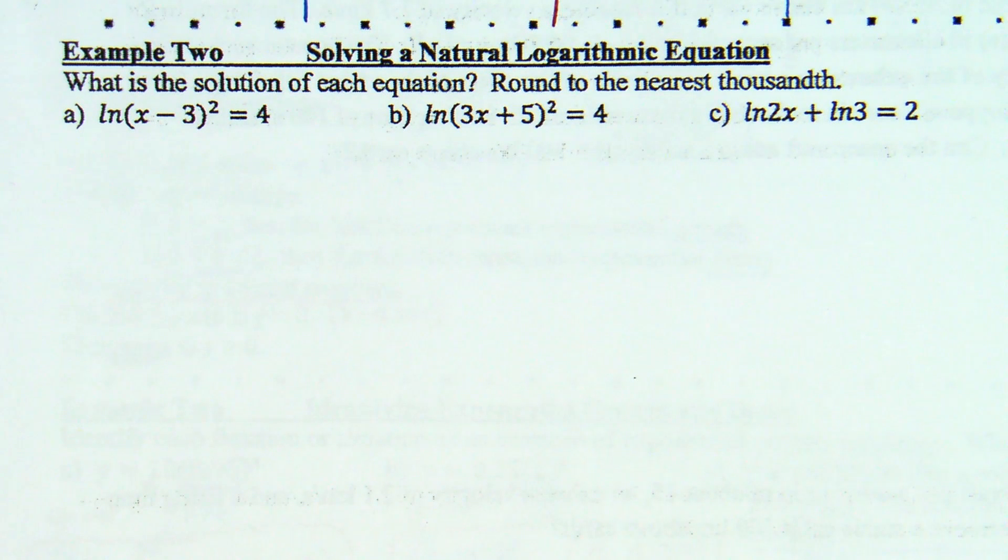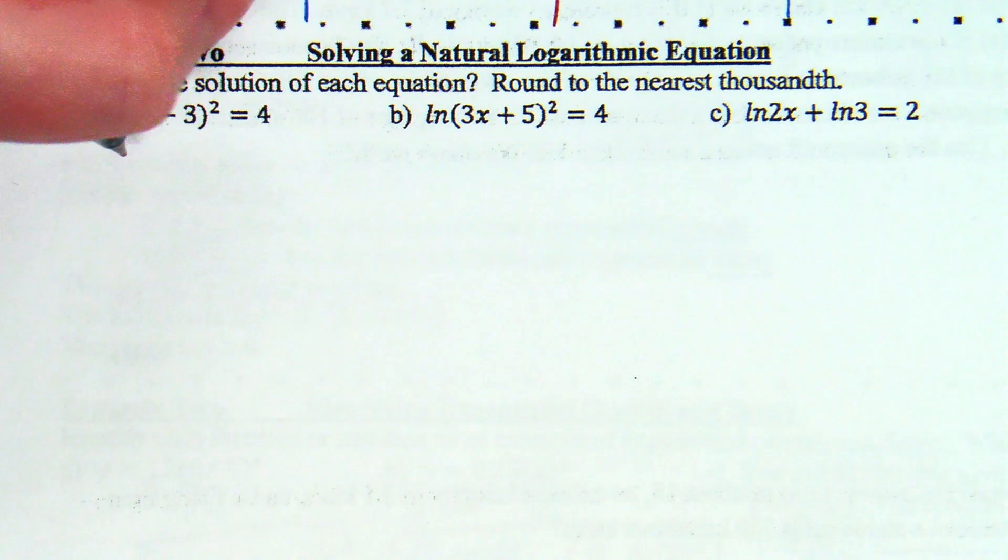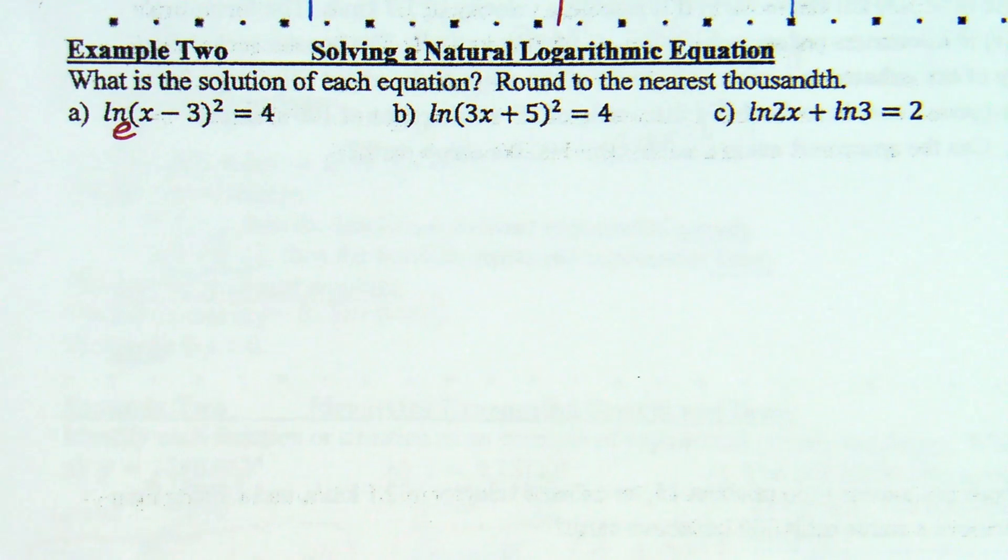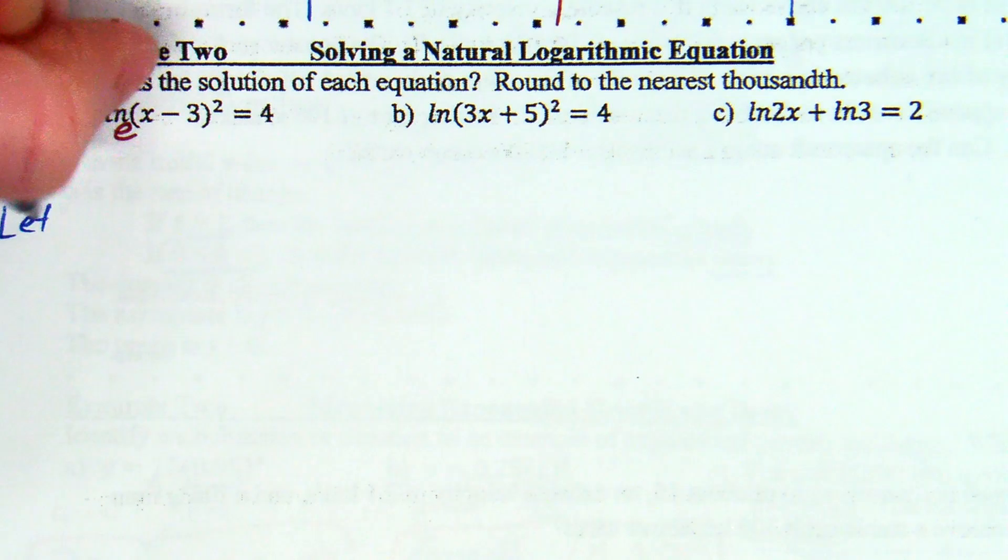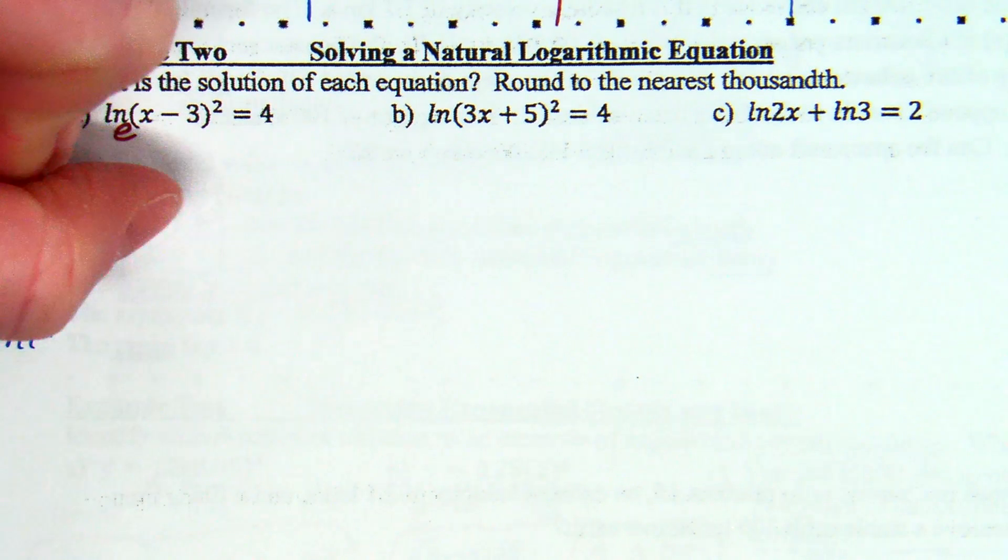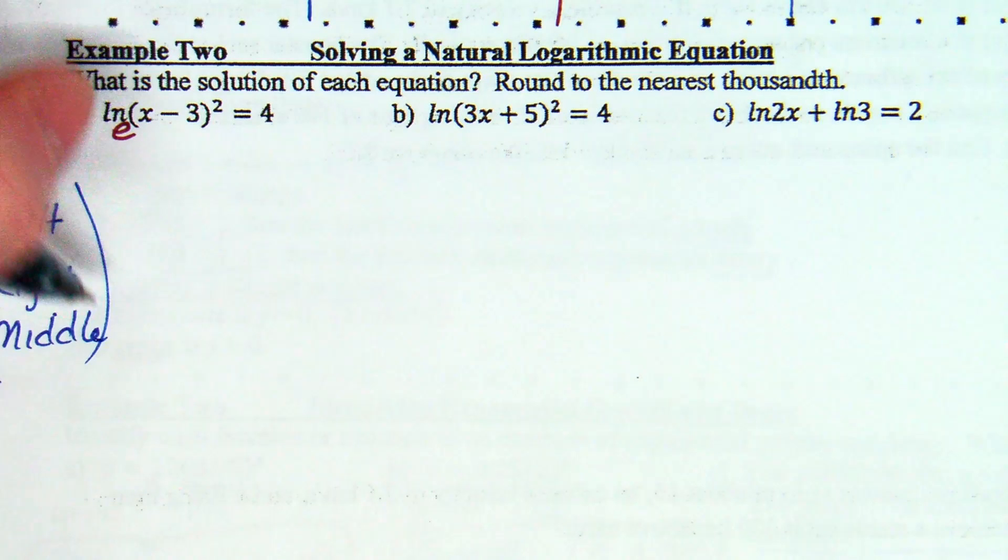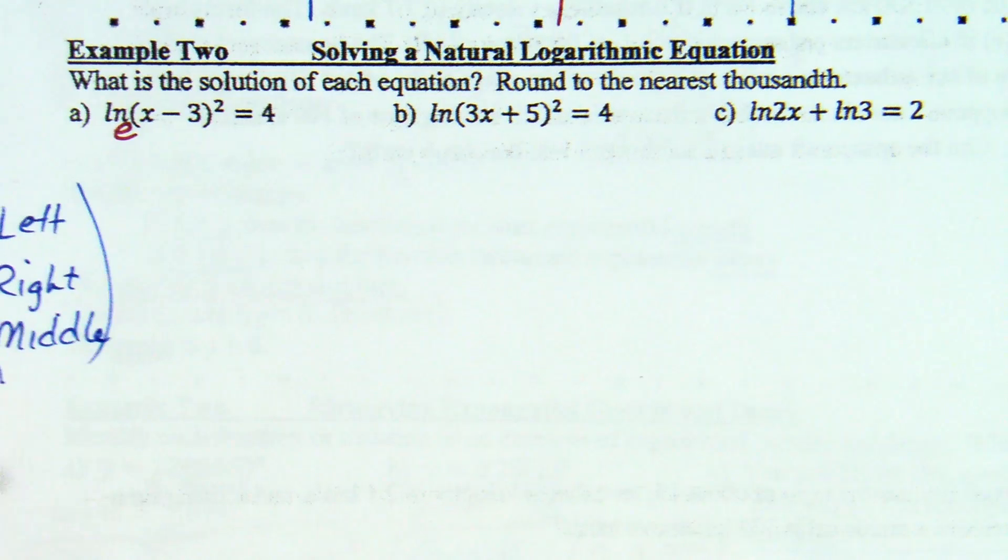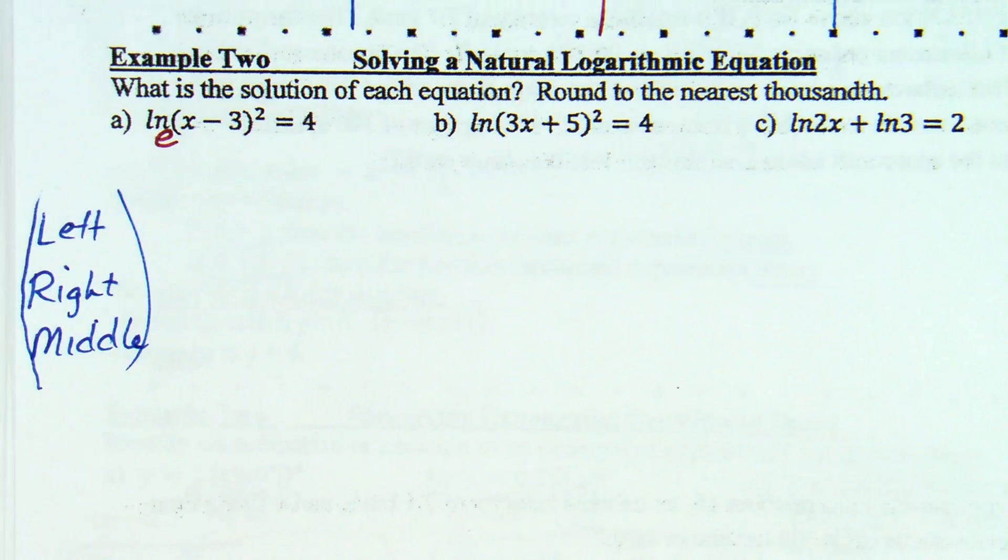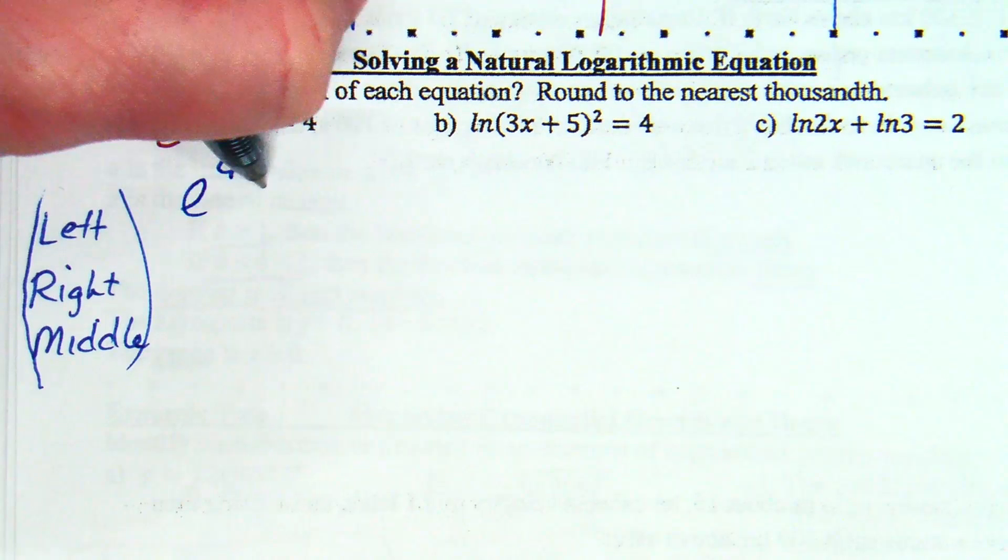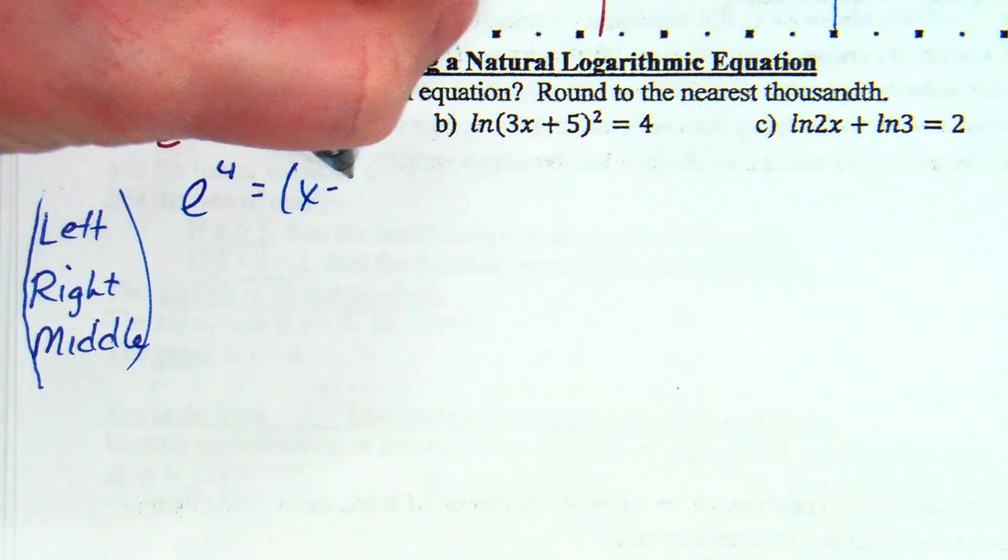Okay, when you have, and this is, if you look back, this is what we did at the end of Lesson 7-5. Like the last four examples I did were like this, except they were log base 10. So, what base is this? E. So, if you need that little visual, this is base E. So, the phrase left, right, middle. So, how does left, right, middle work here? Okay, so, left to the right. So, E to the fourth equals the middle of X minus 3 squared.